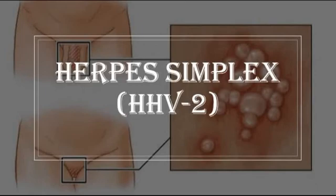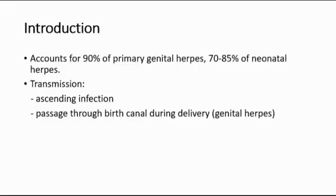This is Part 2 of the herpes simplex virus infection. For introduction, herpes simplex virus infection, especially the serotype HHV2, accounts for 90% of the primary genital herpes cases and also accounts for 70 to 85% of neonatal herpes.